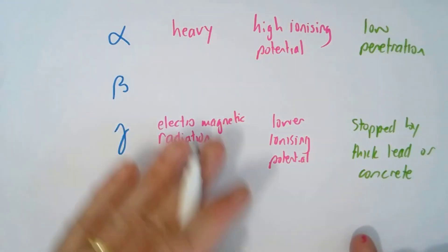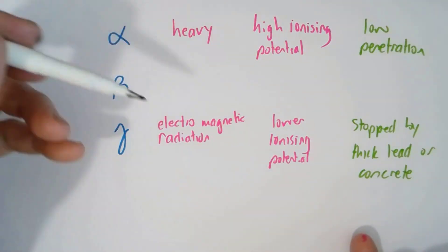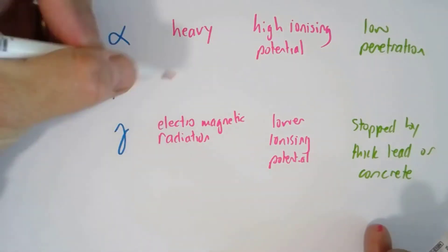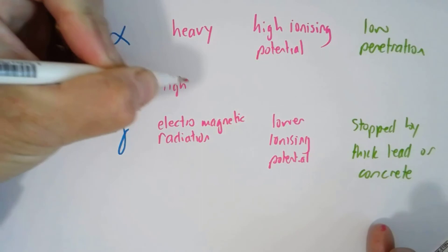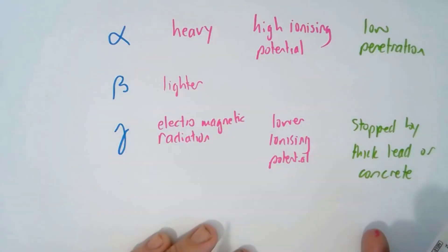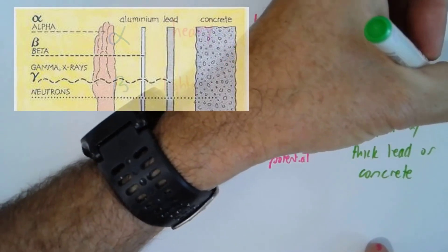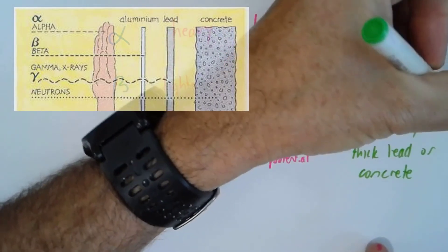Beta is somewhere in between. It's obviously much lighter than an alpha particle, and the ionising potential is somewhere in between. And it gets stopped by one millimetre of aluminium.